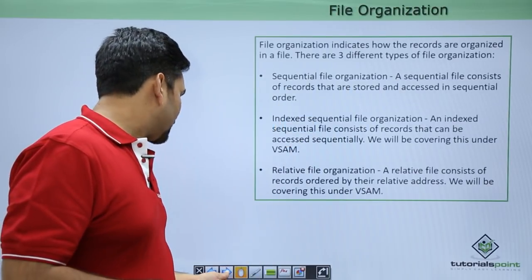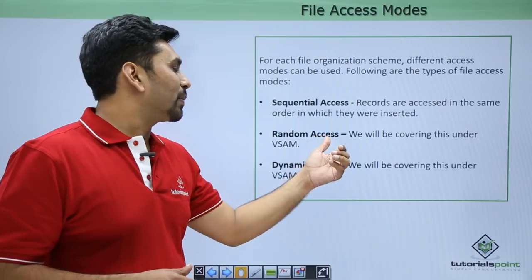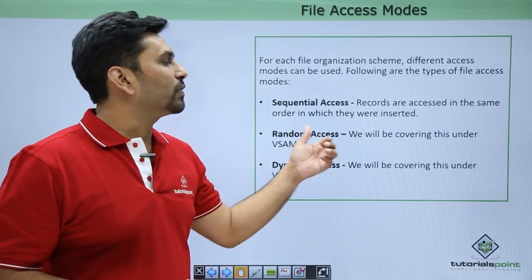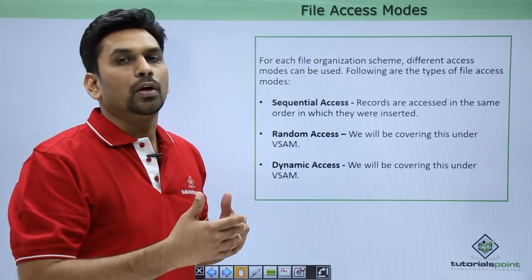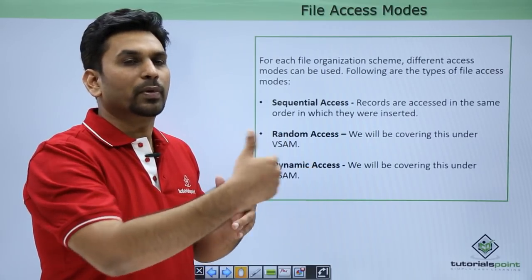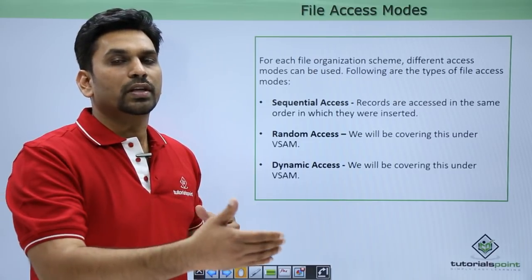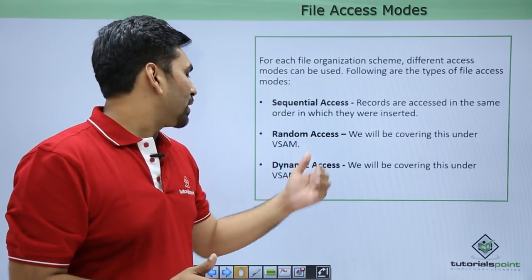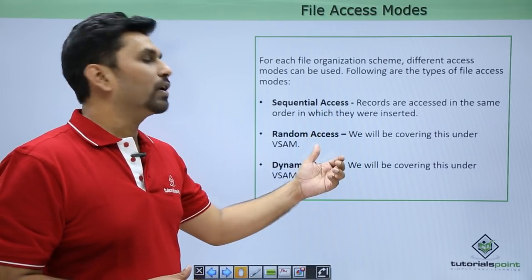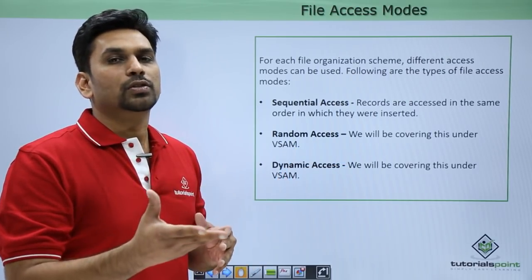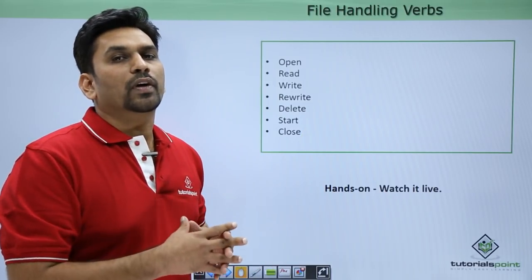Next is file access mode. For different organizations we can have different file access modes. We have three types: sequential access, random access, and dynamic access. Sequential access means records are accessed in the same order in which they are inserted, and this is applicable only for PS files. In a PS file you cannot select records randomly, put a query, or insert records in between. Random access lets you fetch a record based on a key. Dynamic access has both sequential and random access combined.